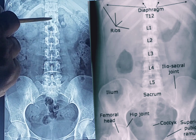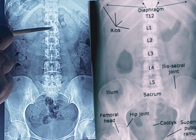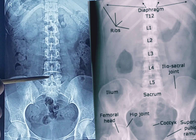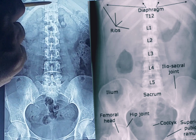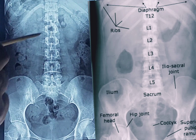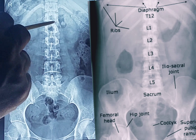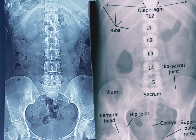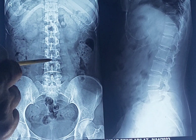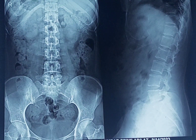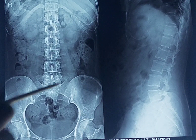Then we can count the lumbar vertebrae: lumbar one, two, three, four, and five. After that, this is the sacrum. All these vertebrae are in the midline. This shadow is the body of the vertebra, and these are the spines of the vertebra. We will see the spines more clearly in the lateral view.